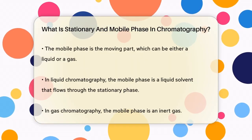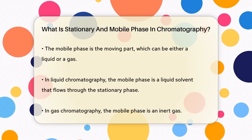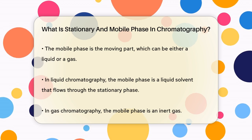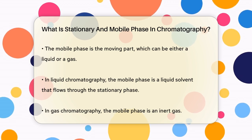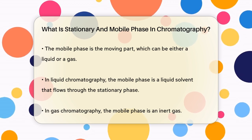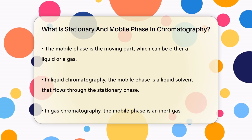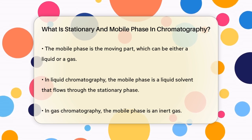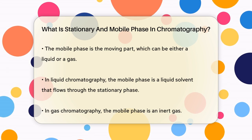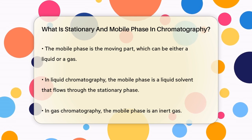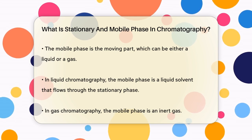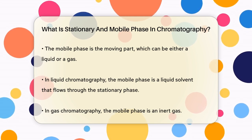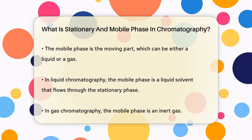The stationary phase is where the magic happens, as it interacts with the substances you want to separate. On the other hand, the mobile phase is the part that moves. It can be a liquid or a gas, depending on the type of chromatography you're doing. For example, in liquid chromatography, the mobile phase is a liquid solvent that flows through the column, while in gas chromatography, it's an inert gas.